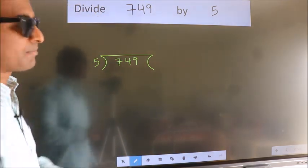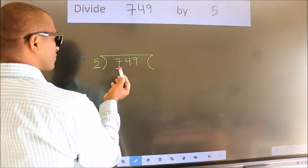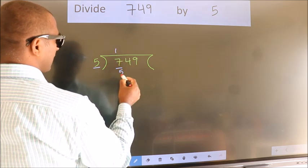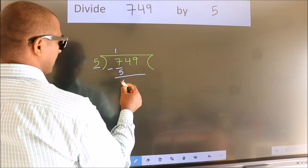Next, here we have 7, here 5. A number close to 7 in the 5 table is 5 once 5. Now we should subtract. We get 2.